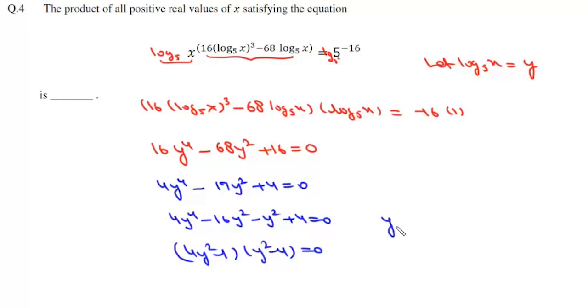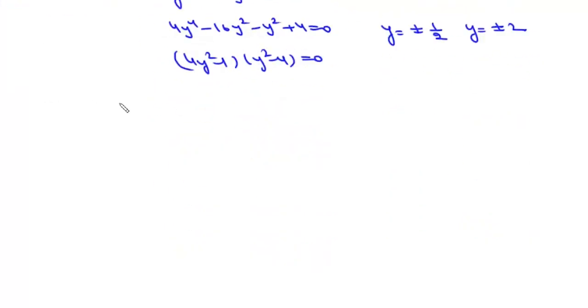That is, the value of y is either plus or minus 1 by 2, or the value of y is plus or minus 2. Now this y is log x base 5, so log x base 5 is either plus or minus 1 by 2, or this value is plus or minus 2.